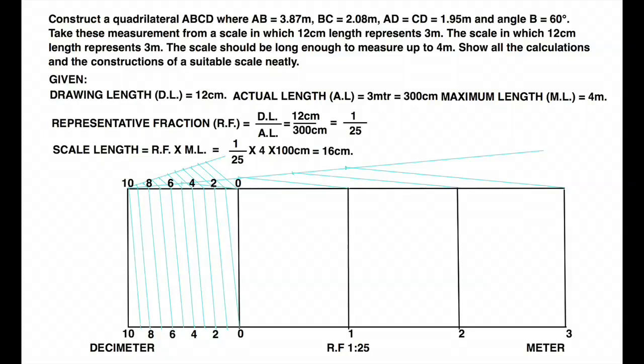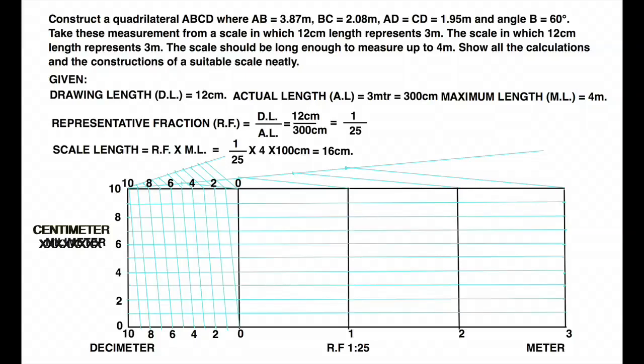Now we will divide this vertical line which is 50 into 10 parts. So that will be 0, 2, 4, 6, 8, 10. So that will be centimeter. Now we will draw horizontal lines. So now diagonal scale is complete.